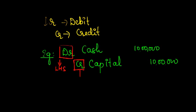The left-hand side represents debit, which is cash, and the right-hand side represents credit, which in this case is capital. You can also notice that the totals of debit equal the totals of credit.